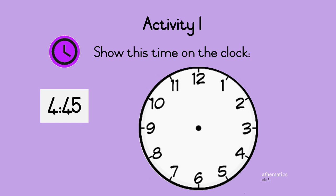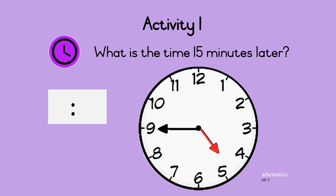Here is another one: show this time on the clock — quarter to five. The minute hand is on the nine, showing 45 minutes, and the hour hand is between four and five but closer to five. What is the time 15 minutes later? Let's move the minute hand clockwise by 15 minutes. The minute hand points to 12, which is zero minutes, and the hour hand now points on five. So the time is five o'clock. Great!